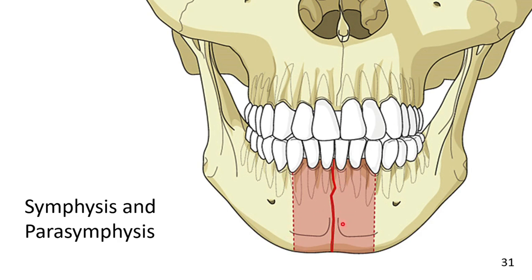In the middle is the symphysis and around it is the parasymphysis, but there is no clear-cut demarcation between the symphysis and parasymphysis. The demarcation between the body and the symphysis is the canine area.